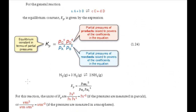You may also have met previously the equilibrium constant Kp, which is defined in terms of the partial pressures of the reactants and products when the reaction has come to equilibrium. Kp is particularly useful when the reaction takes place in the gas phase, though Kc can also be used in such cases.